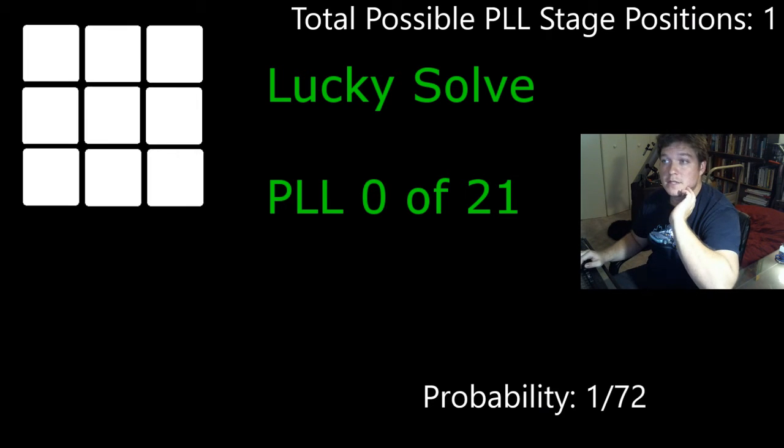So we're going to start with the first position that you can get to which is solved. There's only one way to have the cube solved so our total count is one and the probability is one in 72, one over the total.